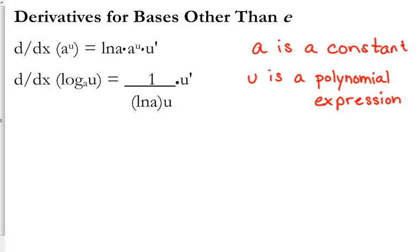Technically, you can still do that with e to the u, because the natural log of e is 1. So it's kind of like our chain rule — when we technically don't have to do the chain rule, but we still could, because the derivative of whatever it is is 1.